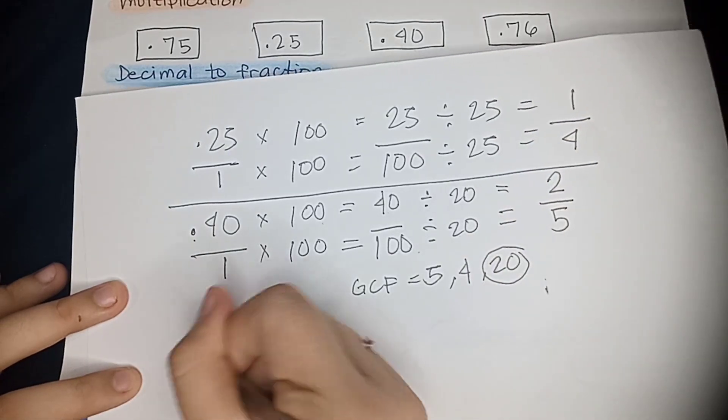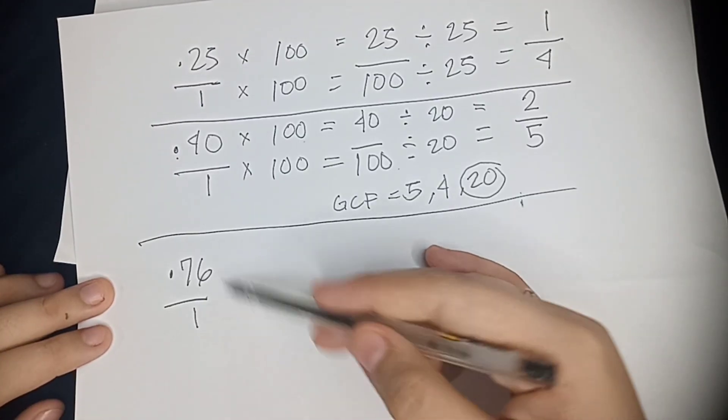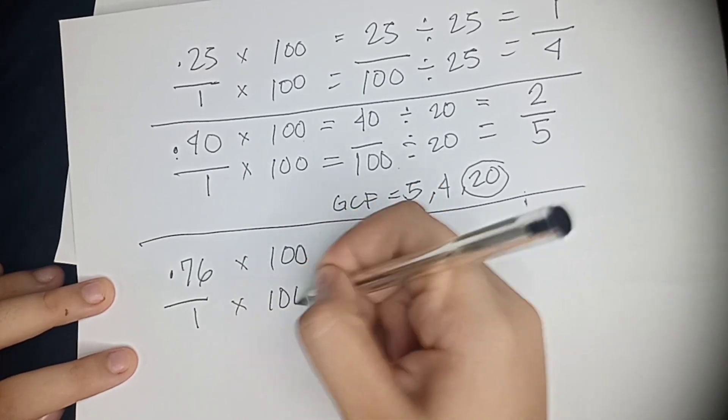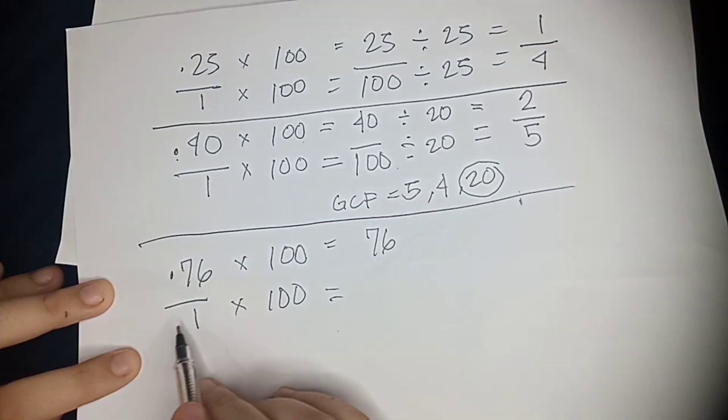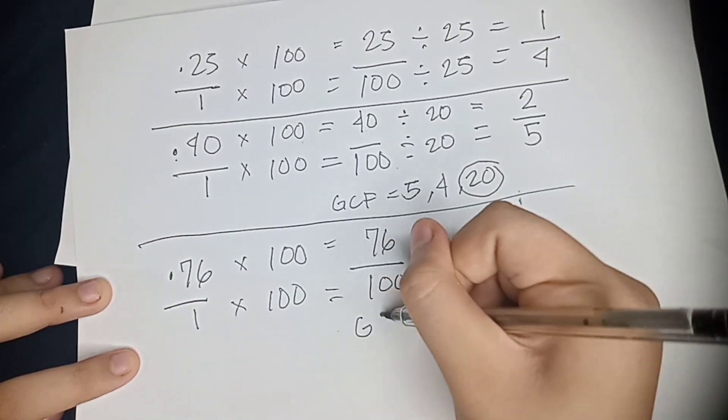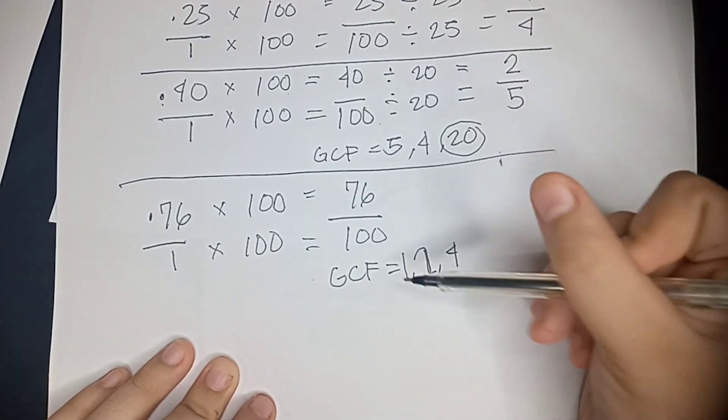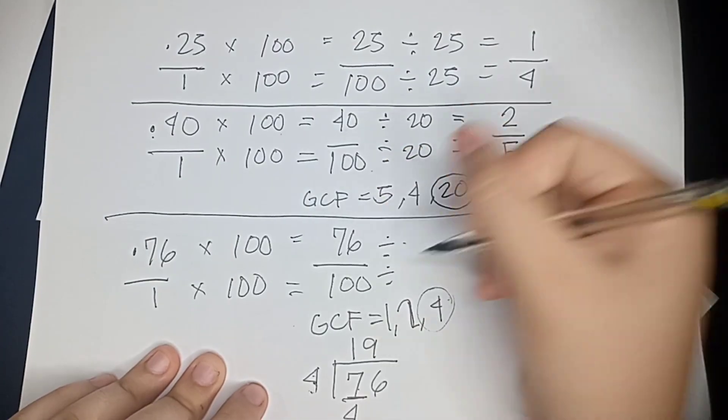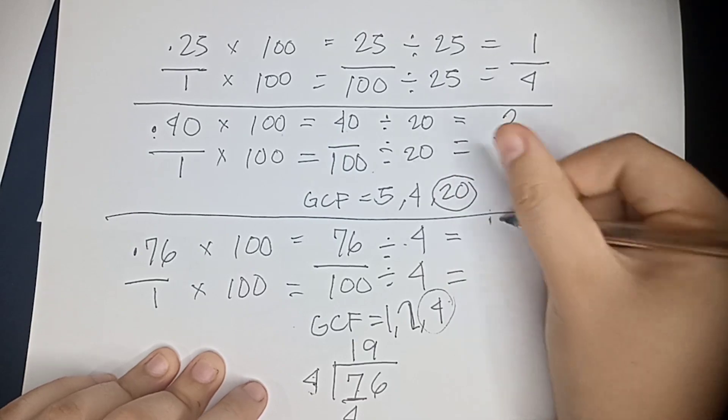Now let's move on to 0.76. So 0.76 over 1. Let's multiply both sides by 100. So that gives us 76 over 100. And now we're going to find their greatest common factor, which is 4. And we're going to divide both sides by 4, which gives us 19 over 25.